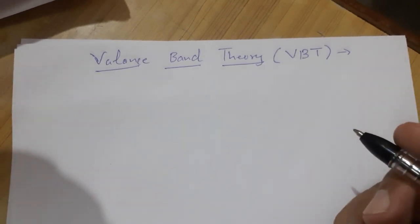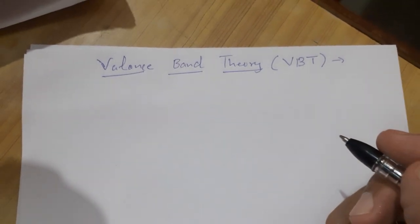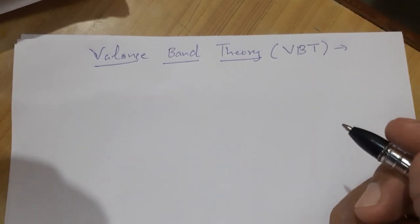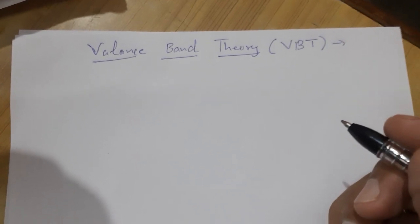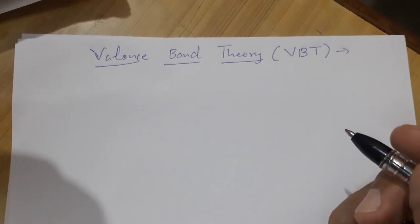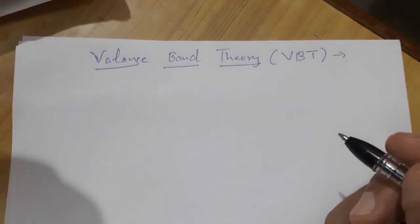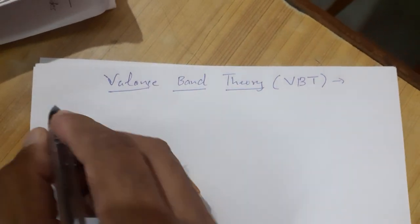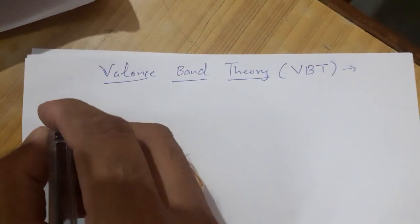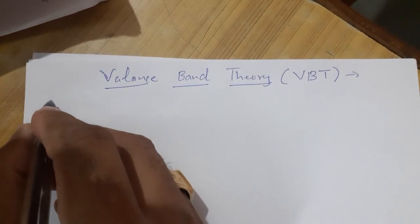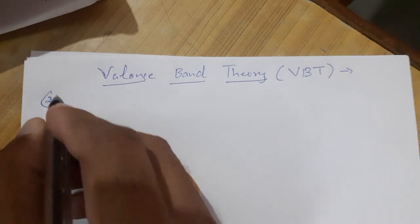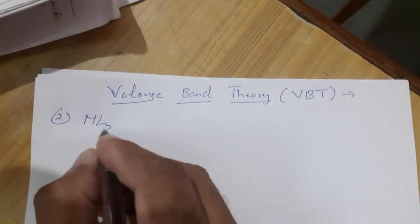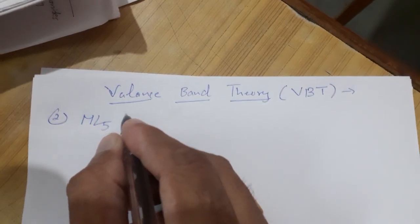Good morning to all of you. Yesterday we discussed the topic of valence bond theory under which we discussed ML6 type of complexes. Today we are going to discuss number 2: ML5 type of complexes.